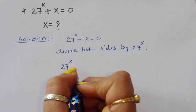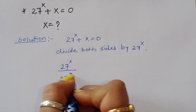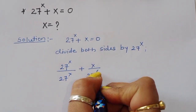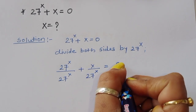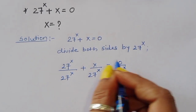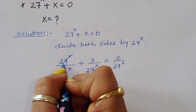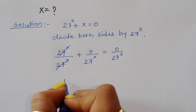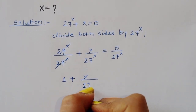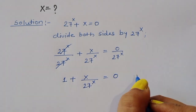After dividing: 27 power x divided by 27 power x, plus x divided by 27 power x, equals 0 divided by 27 power x. The first term cancels, so we get 1 plus x divided by 27 power x equals 0.